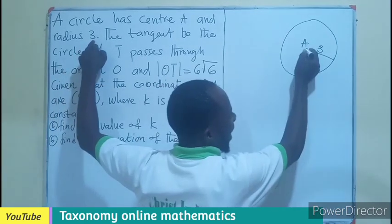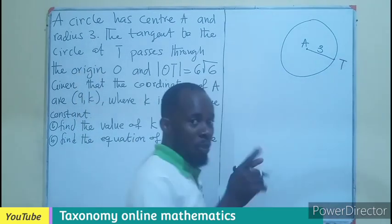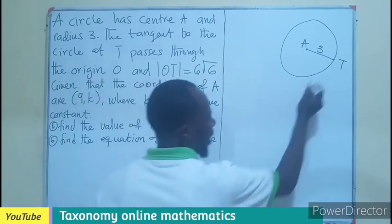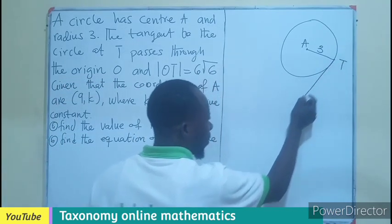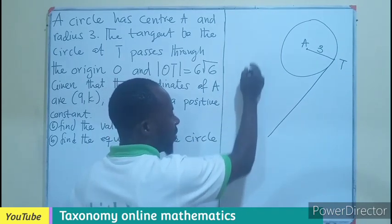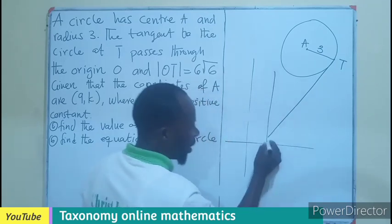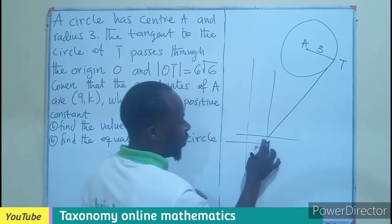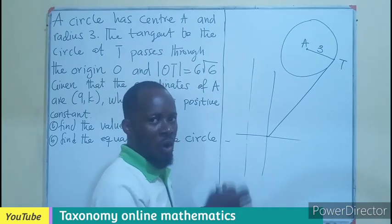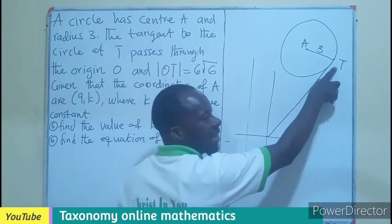Now, where the radius touches the circle, that is where we are calling T, the point where the tangent is going to pass. So the tangent can pass here. From the first diagram I drew with the plane, we can see that our XY plane can be here, as in this way, where we can have here being the origin of that plane.